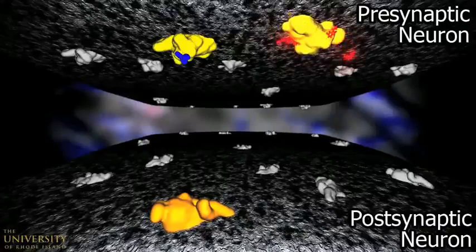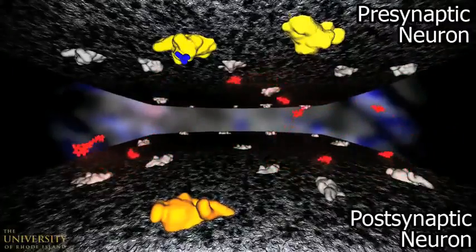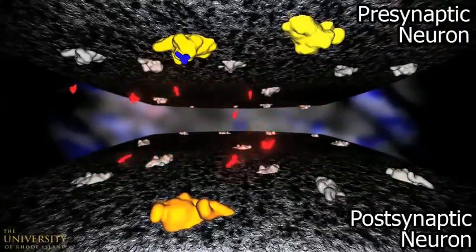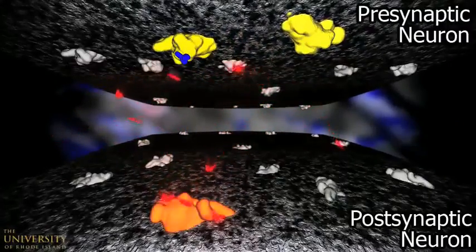When the serotonin is denied entry to the reuptake protein, it must either float in synaptic space or interact more with the postsynaptic serotonin receptor. The more time serotonin molecules spend in these states, the more significant Prozac's antidepressant effects.